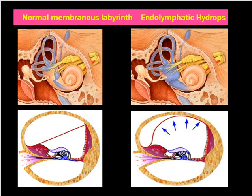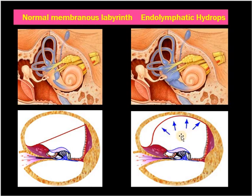You can see the pathology of Meniere's disease here. This is the normal membranous labyrinth, and this is hydrops. This is normal, and this is the swollen saccule, which is also called hydrops — excessive accumulation of fluid in the saccule.